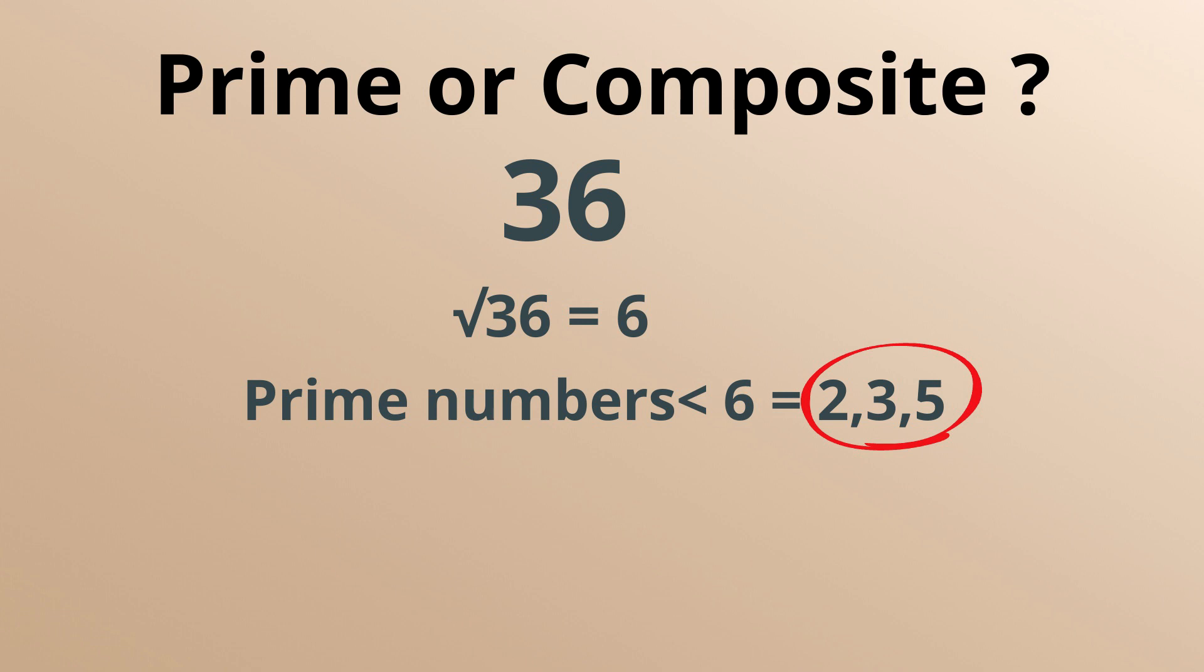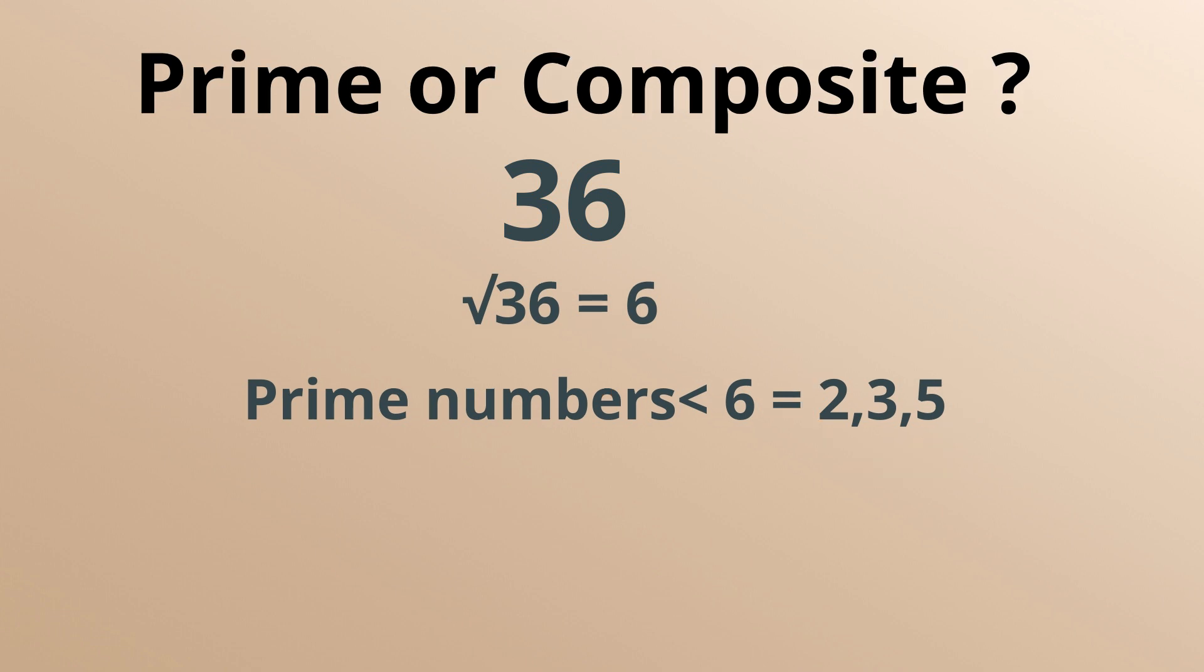And if it is divisible by one of these numbers, 2 or 3, then it's a composite number. And it is divisible by both 2 and 3.